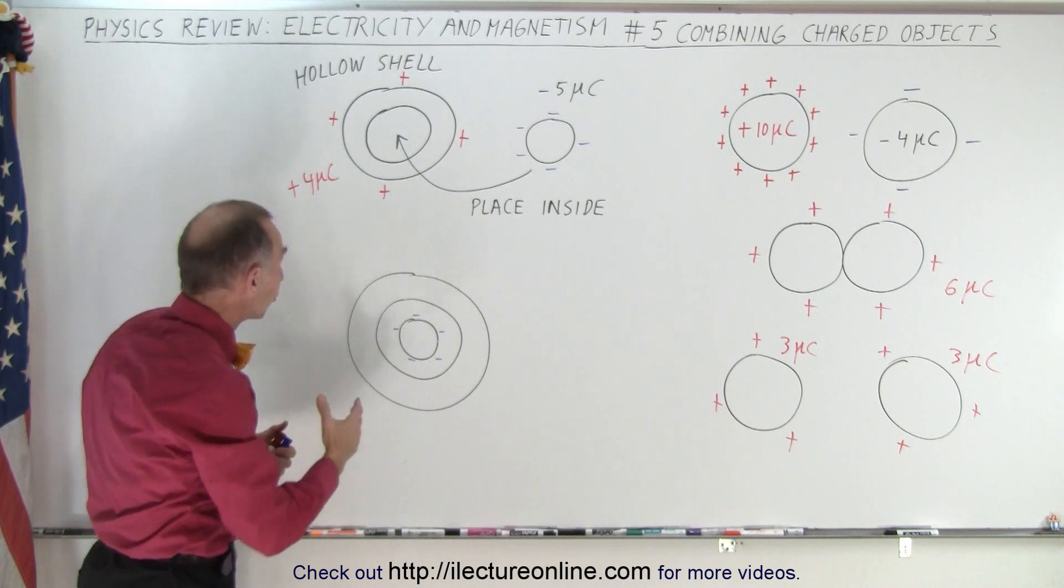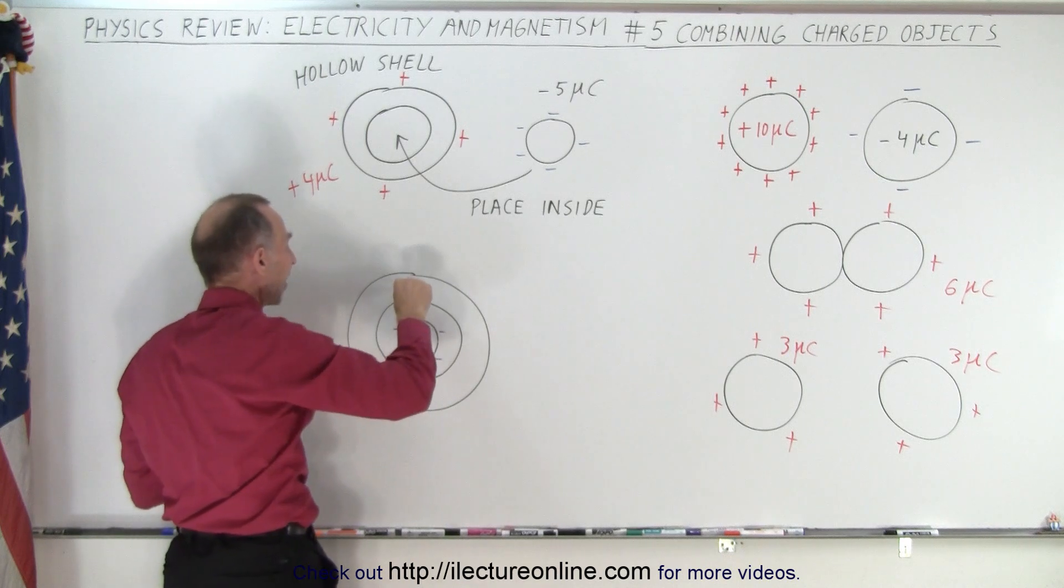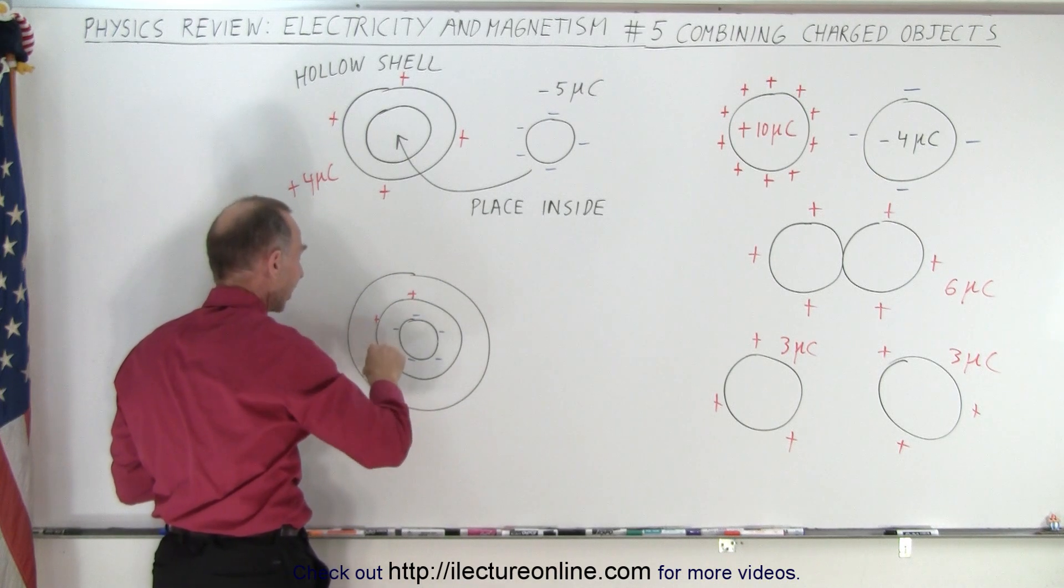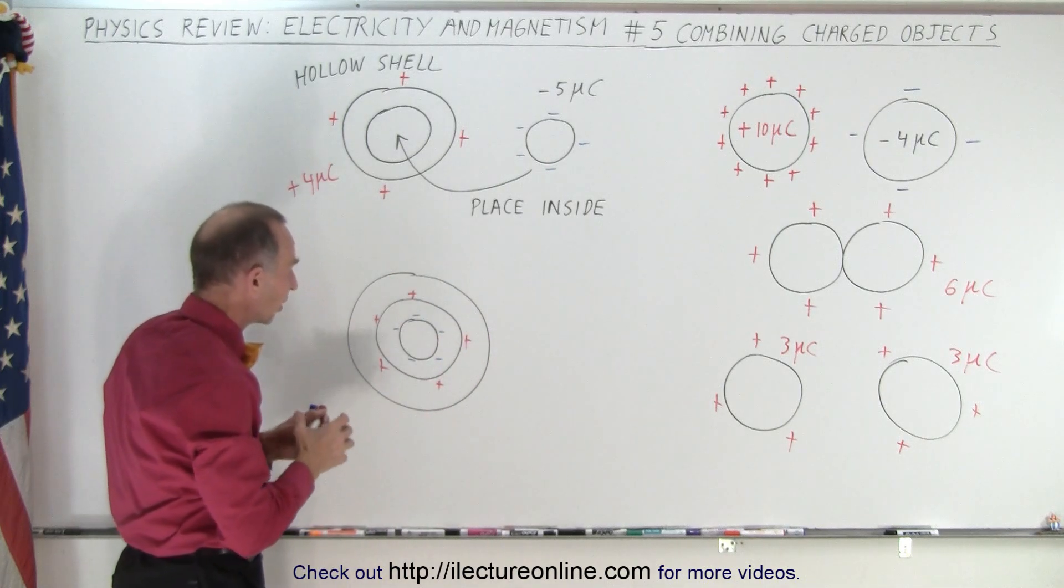And not just the four of them, but it will pull an additional positive charge so that you'll have a total of five positive charges residing on the inner surface of this hollow shell.